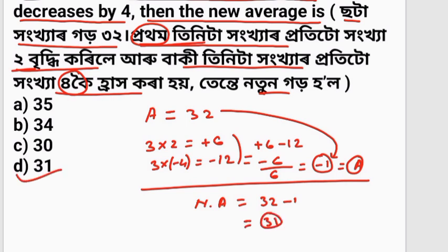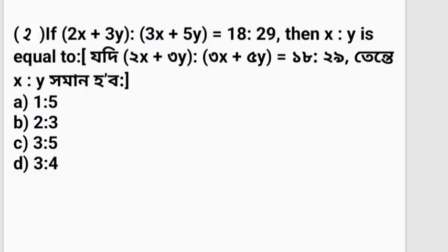31 is the correct answer. Next question: If 2x plus 3y is to 3x plus 5y equal to 18 is to 29, then x is to y equal to what?